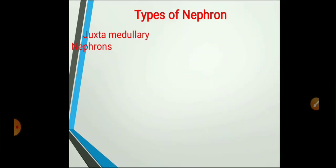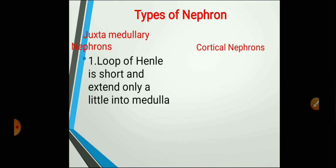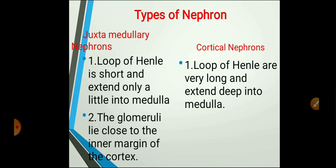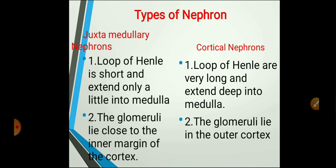There are two types of nephrons: juxtamedullary nephrons and cortical nephrons. In juxtamedullary nephrons, the loop of Henle is short and extends only a little into the medulla; most of the nephron lies in the cortical region, and the glomeruli lie close to the inner margin of the cortex. In cortical nephrons, the loop of Henle is very long and extends deep into the medulla, and the glomeruli lie in the outer cortex.